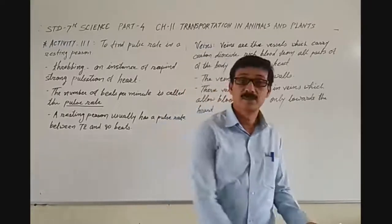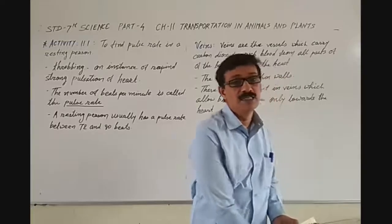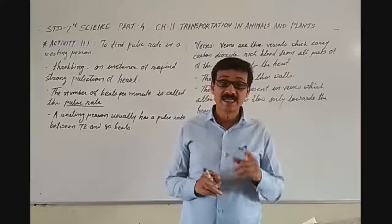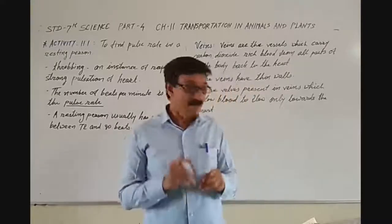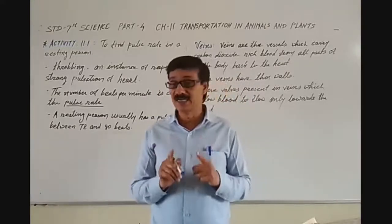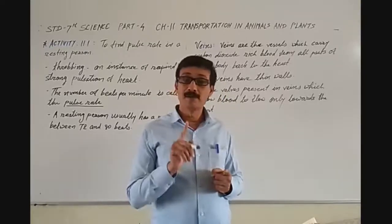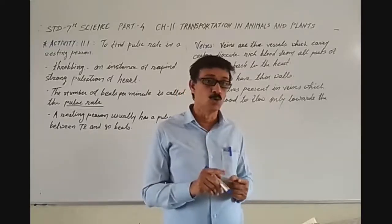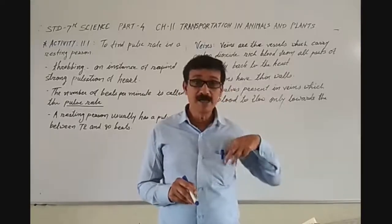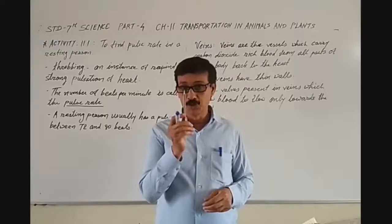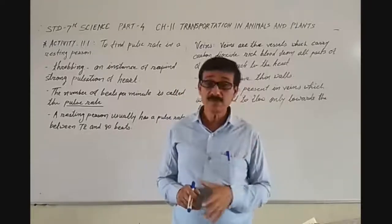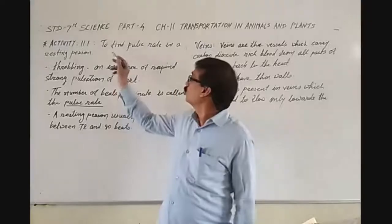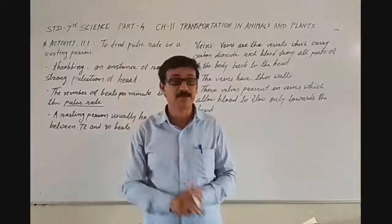Now in this part, we will perform an activity. Activity 11.1, available on page number 122. Open your textbook to page number 122 and keep a sharpened pencil with you. The aim of this activity is to find the pulse rate in a resting person.